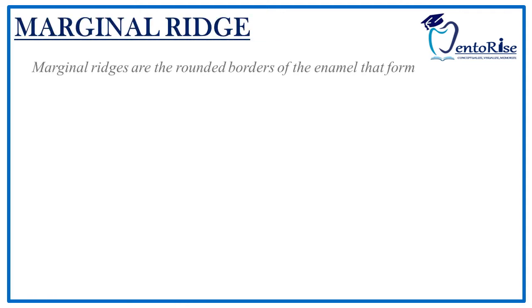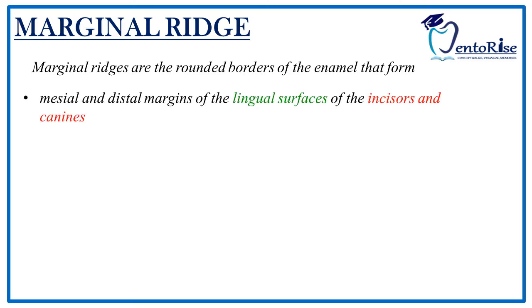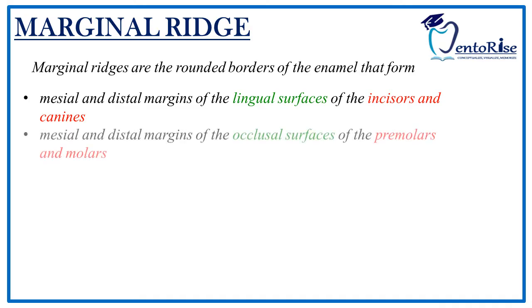Let's deal with the first type of ridge that is the marginal ridge. As the name implies, a ridge means an elevation, and marginal means they are present on the margins. In incisors and canines, these are present on the lingual surface. In premolars and molars, they are present on the occlusal surface. Marginal implies margins, meaning they face towards the two proximal surfaces of the tooth.